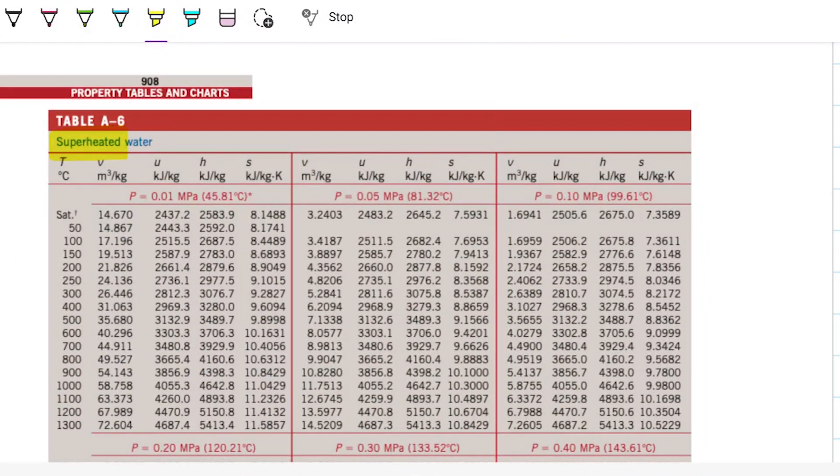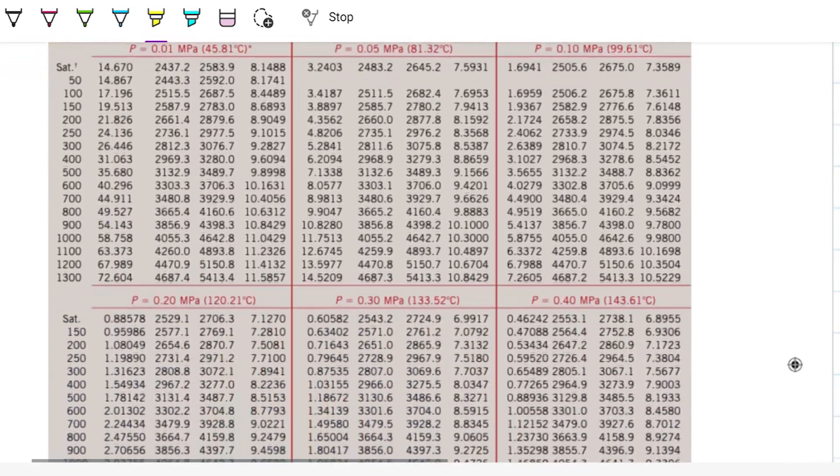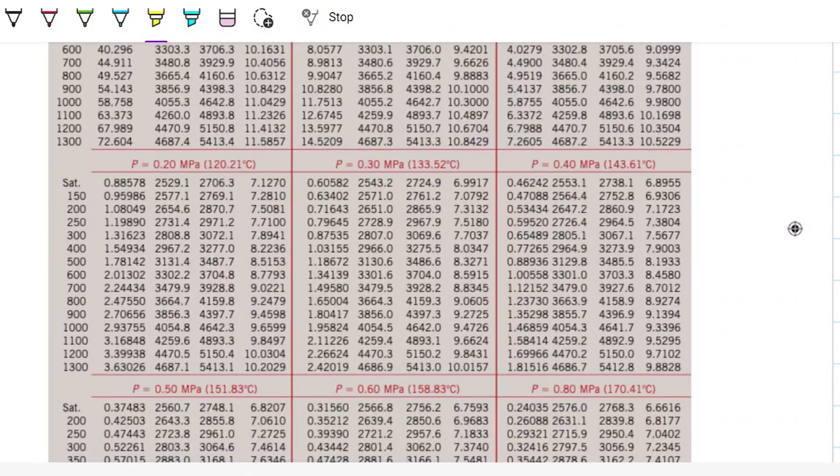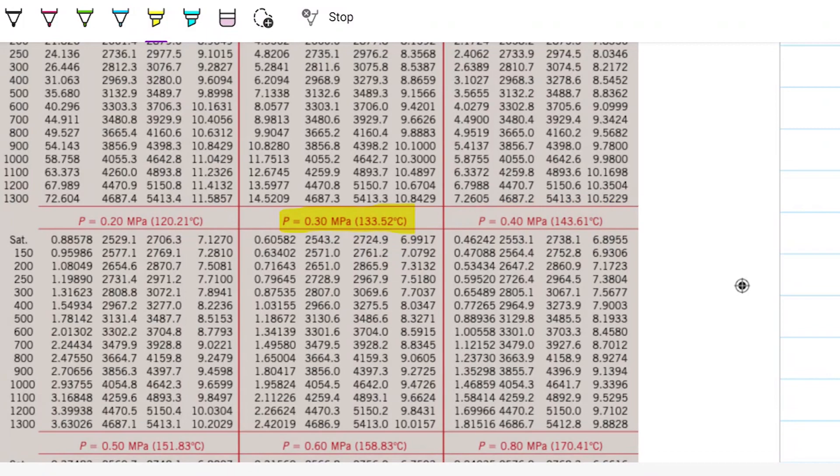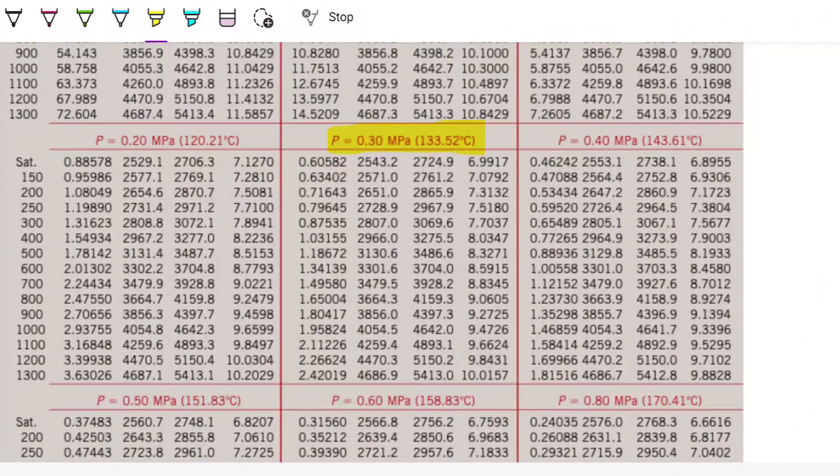There you go. Here we are. And now, same thing, right? We have a pressure of 350 kilopascals, and we have the specific volume of 1.44. So, 300. We have 300, and we have 400 kilopascals. We don't have 350. Oh, sorry. It's 300, isn't it? It's 300. My bad.